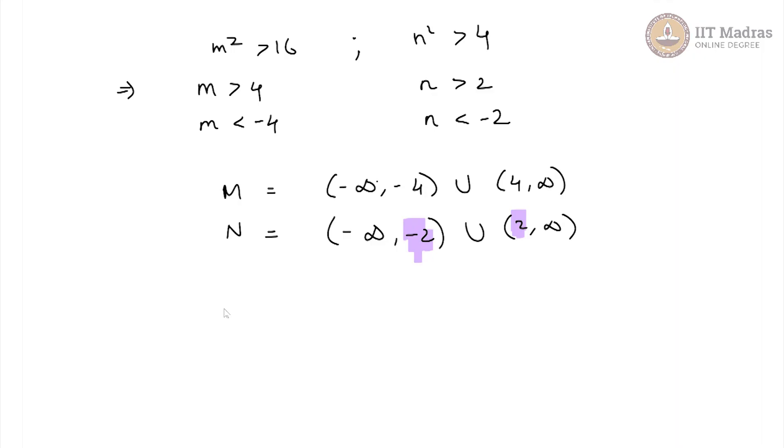So the set we are looking for is some sort of intersection of capital M and capital N because both small m and small n should be drawn from these and in this case that intersection will just be the set capital M because M is necessarily a subset of N.